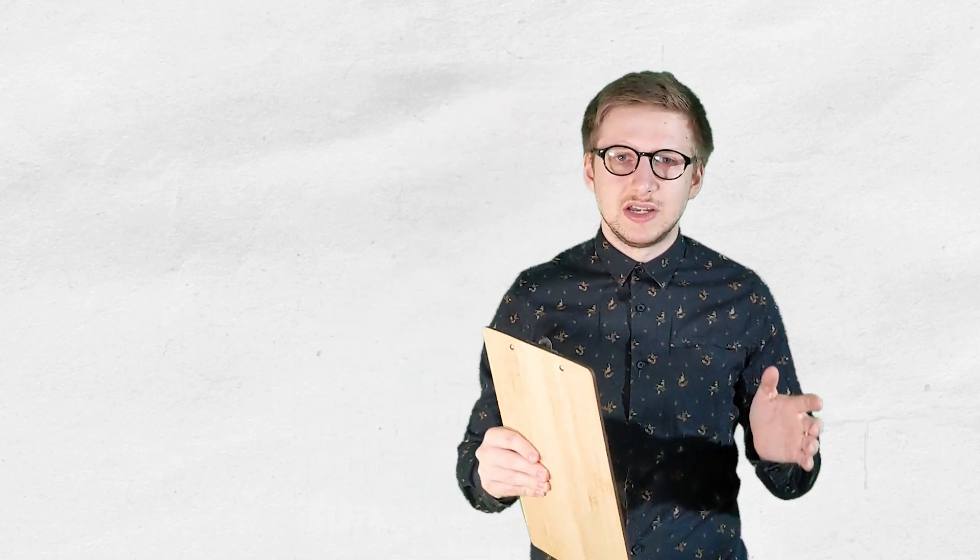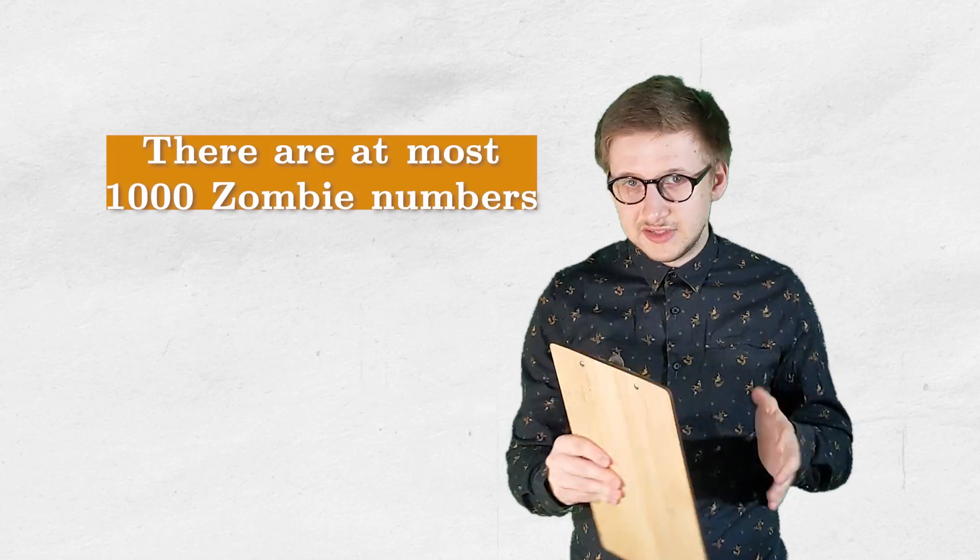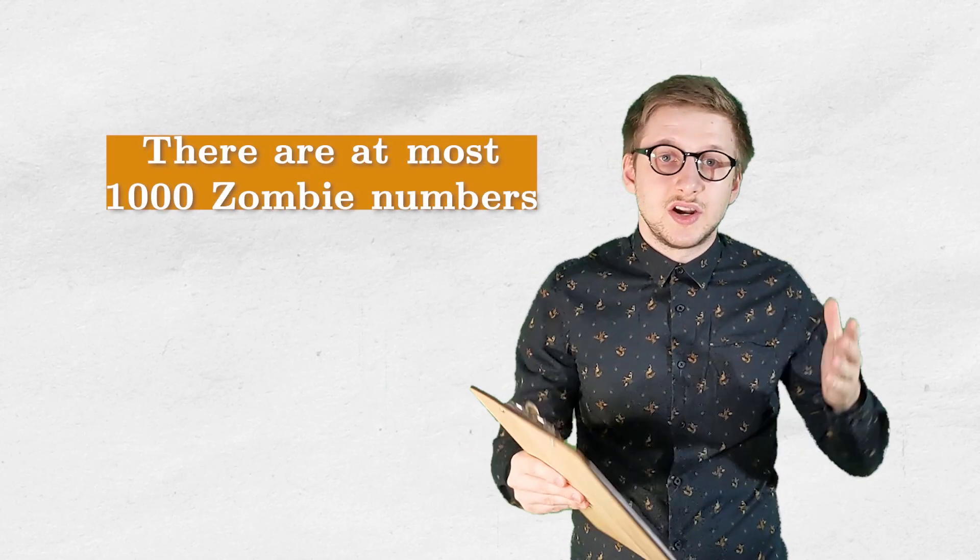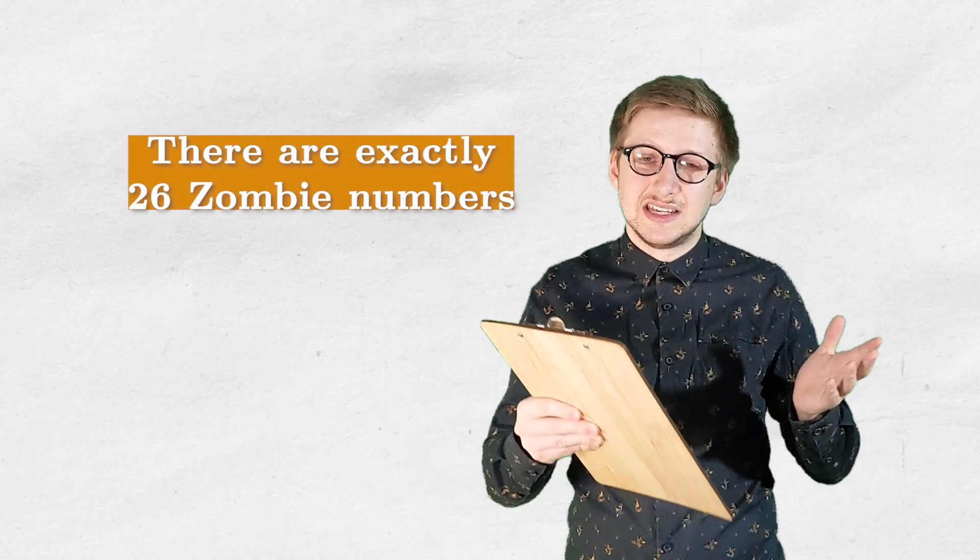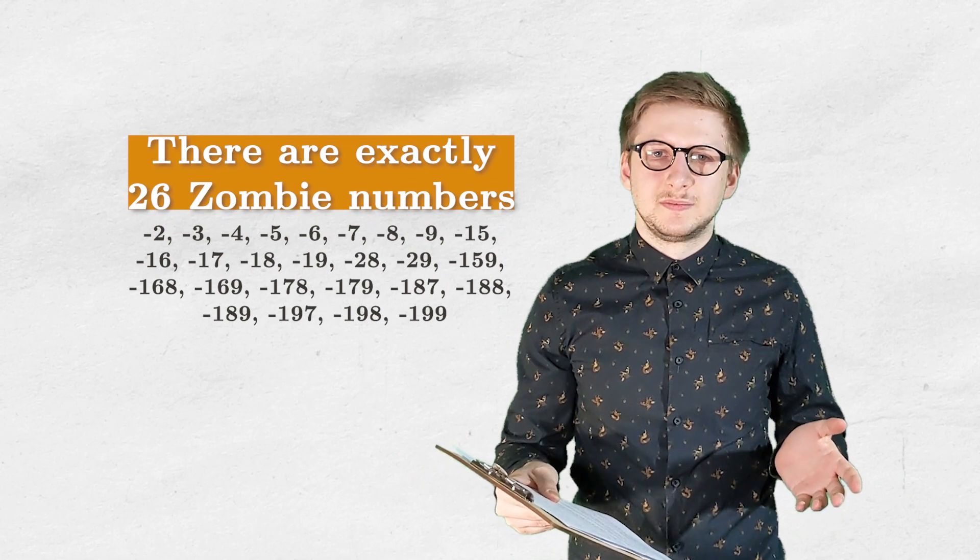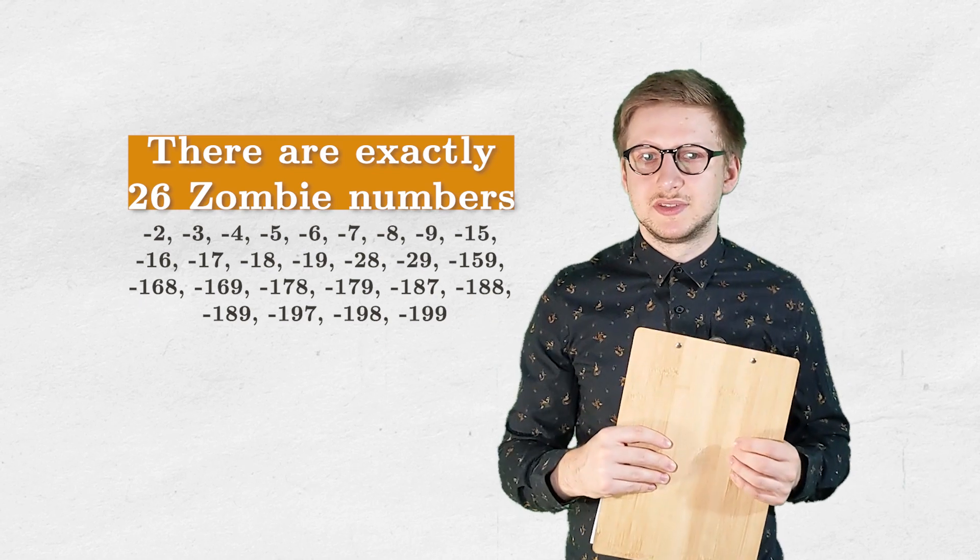We can check manually that the smallest k, for which the inequality doesn't hold, is k equals 4. Therefore, there are at most 1000 zombie numbers. In fact, as you've seen earlier, there are much less than 1000 zombie numbers, because there are exactly 26. That's probably because of a very restrictive definition of zombie numbers.